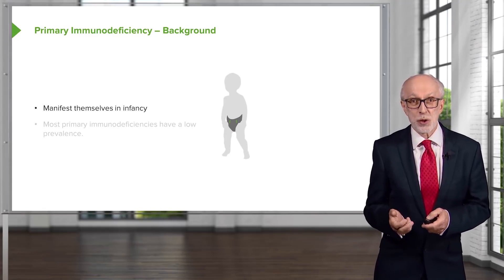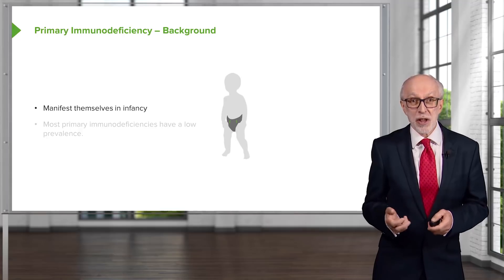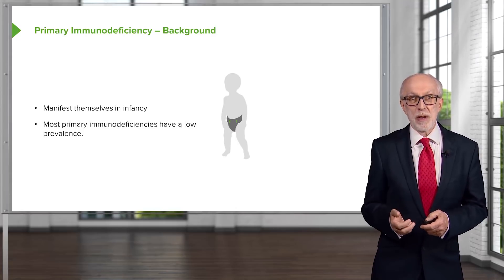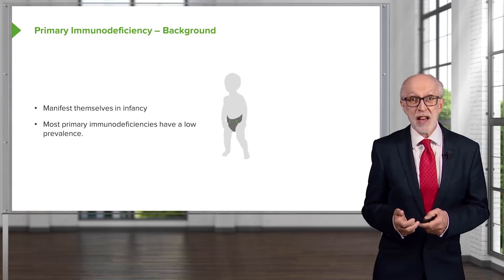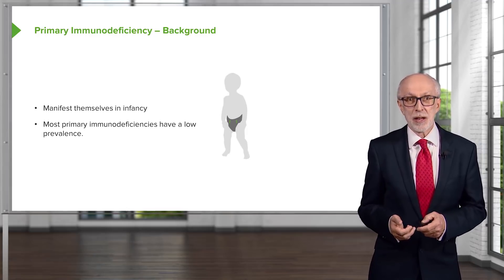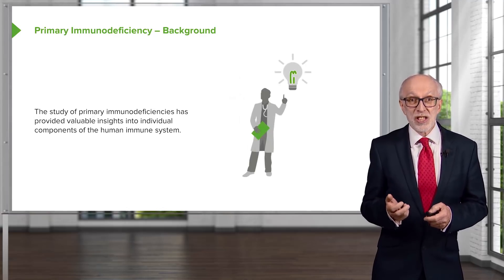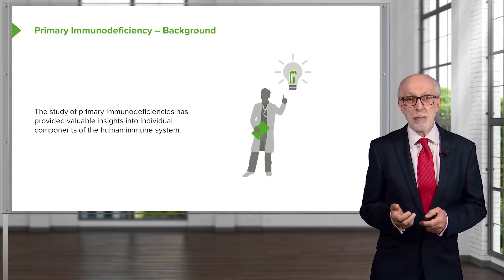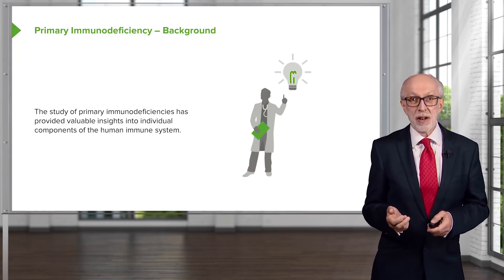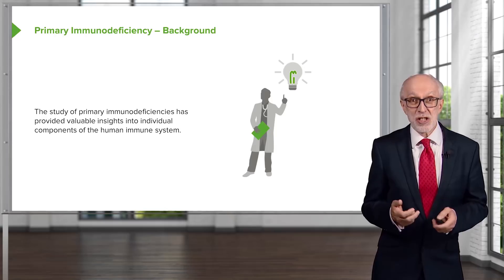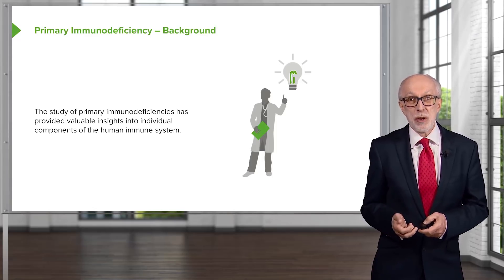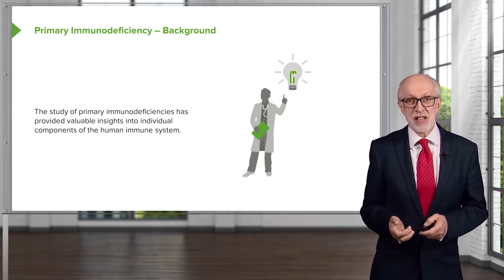When infants are a few months or one or two years old, they'll keep getting recurrent infections and will be investigated. In some of those individuals, they will be found to have a primary immunodeficiency. Most primary immunodeficiencies have a low prevalence — they're fairly rare diseases, generally speaking. However, the study of primary immunodeficiencies has provided valuable insights into individual components of the immune response, enabling us to answer questions about how the immune system functions.